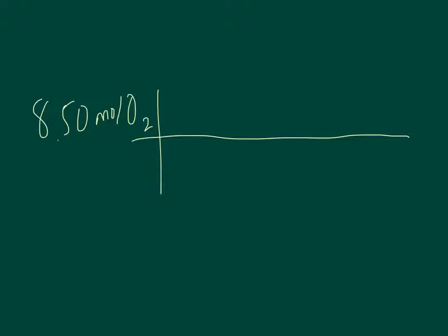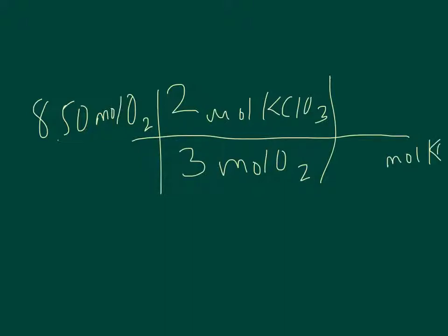I draw out my chart and use the mole ratio of three moles of O₂ to two moles of potassium chlorate. Then I convert moles of potassium chlorate to grams using the molar mass: 122.55 grams of potassium chlorate per one mole.